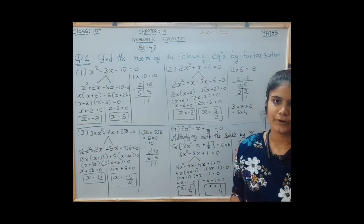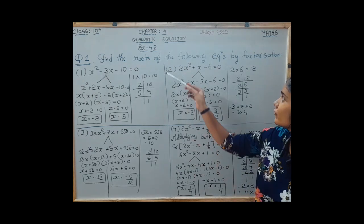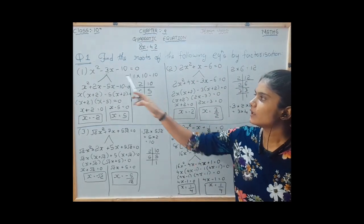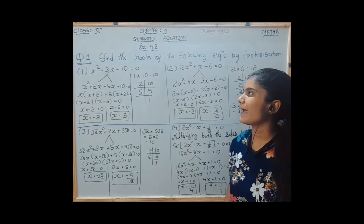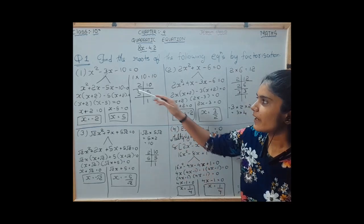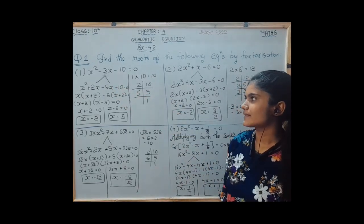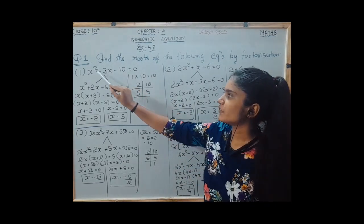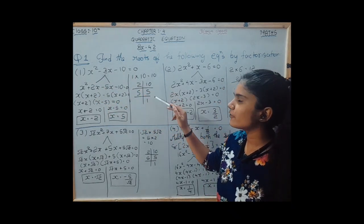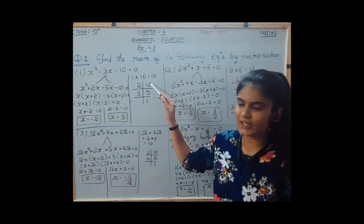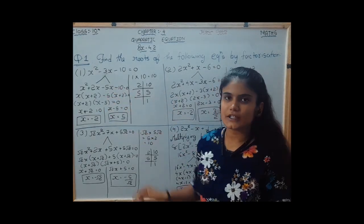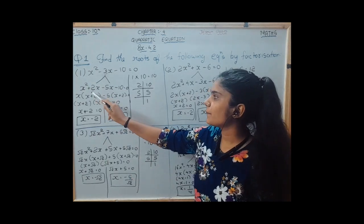Moving to exercise 4.2: find the roots of the following equations by factorization. Question number 1: x squared minus 3x minus 10 is equal to 0. We have to split the middle term minus 3x. For that we multiply the coefficient of the first term and the constant — 1 into 10 — and find factors of 10, which are 2 and 5.